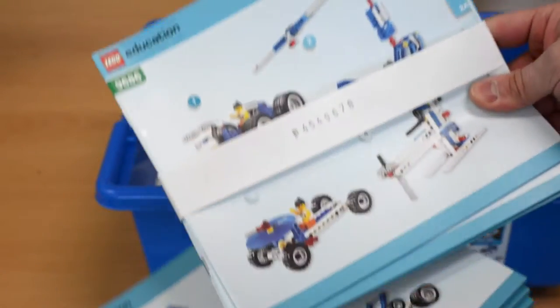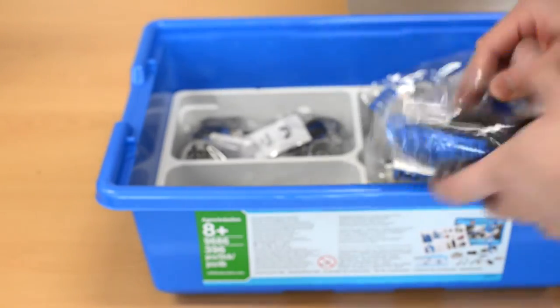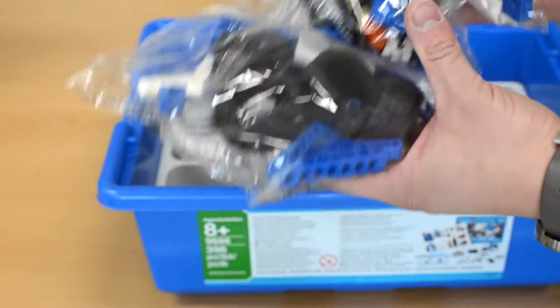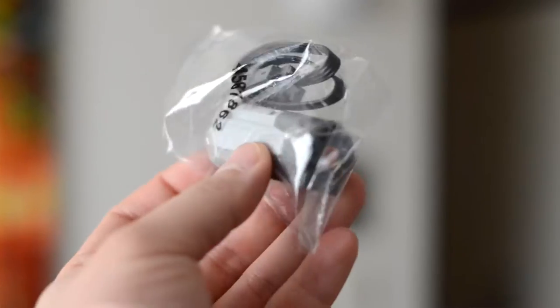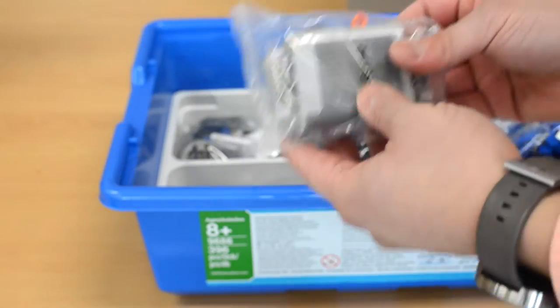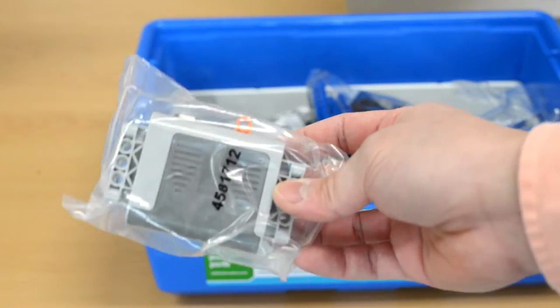At the bottom of the box contains the 396 LEGO Technic elements that students would use to build their creations. This includes a motor for the simple machine activities, and the power functions battery box, which powers the motor.